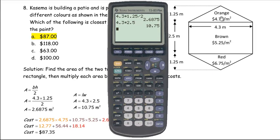I'm going to start with the orange here. This area is 2.6875 square meters, so we multiply that by the cost. The orange paint costs $4.75 per square meter, so that is $12.77.